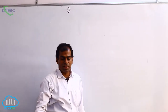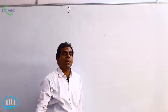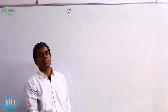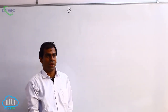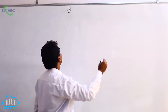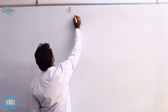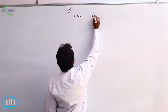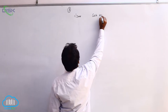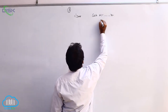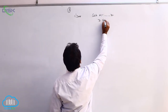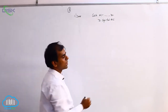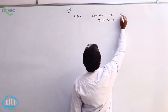We will be discussing the third problem now. The first transaction is on June 1st and it states that the business started with cash. Whenever a business starts with cash, the first entry is cash account debit to capital account — cash account debit to capital account, 5 lakhs.